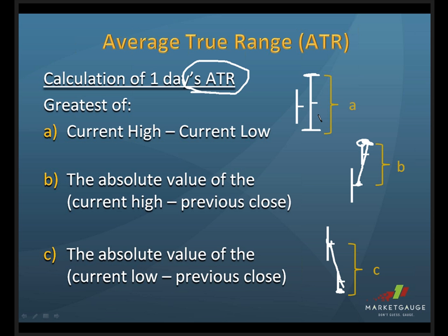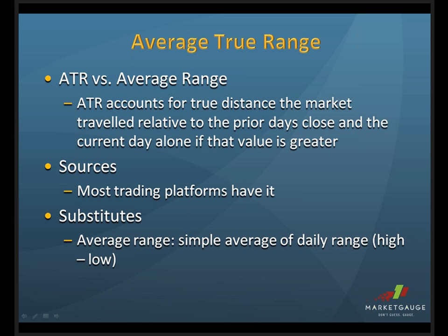So what's the difference between the average true range and the average range? As I just said, the average true range accounts for situations like gaps, whereas average range does not.